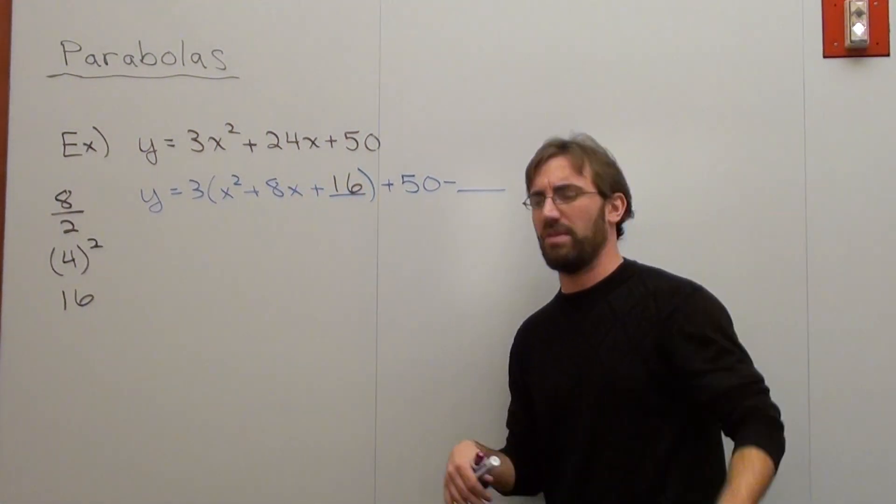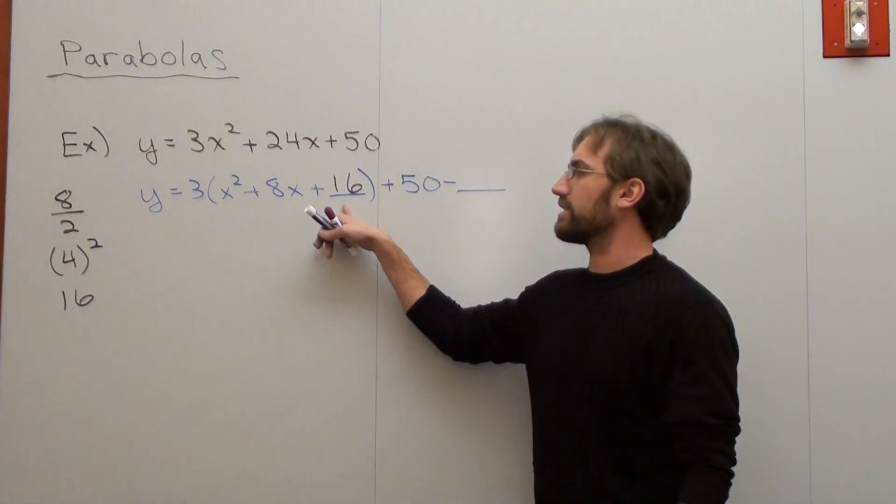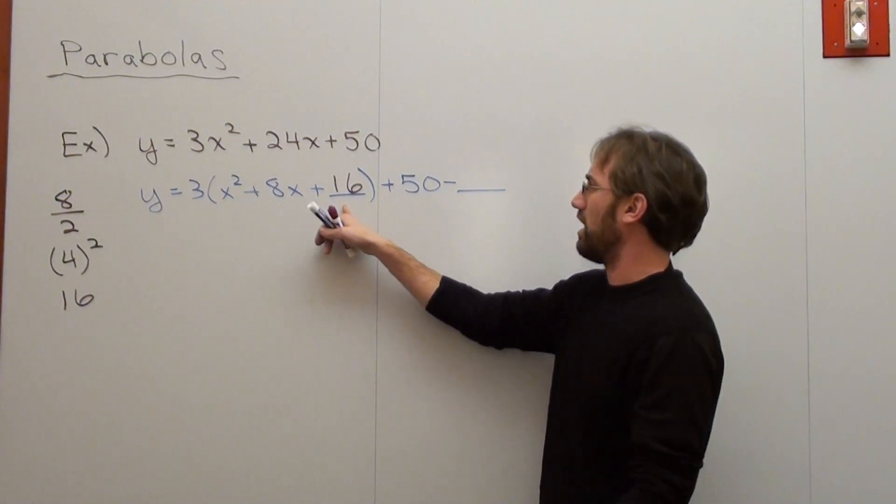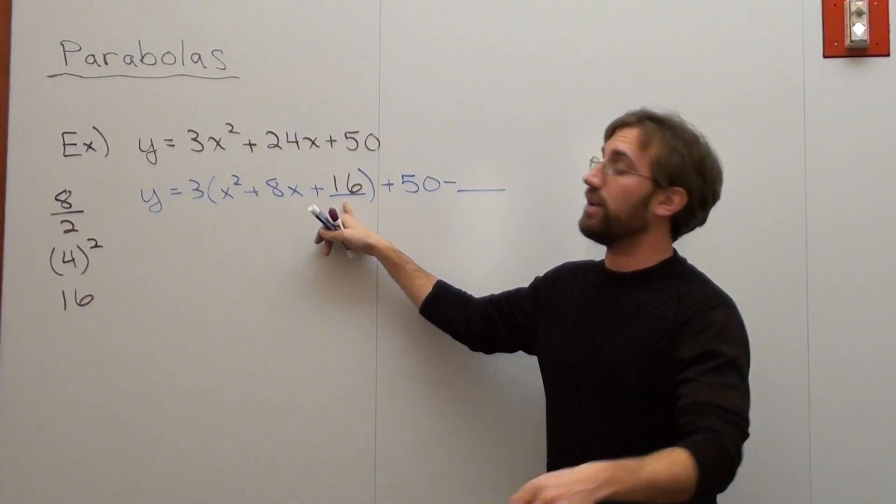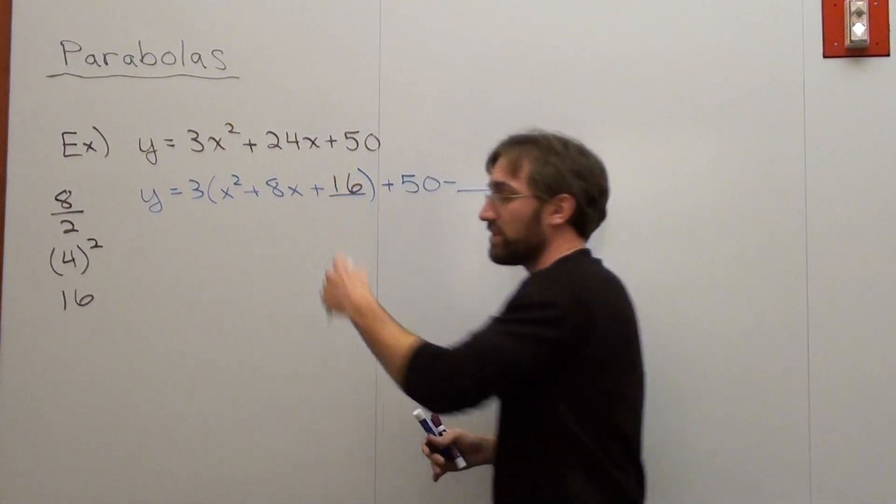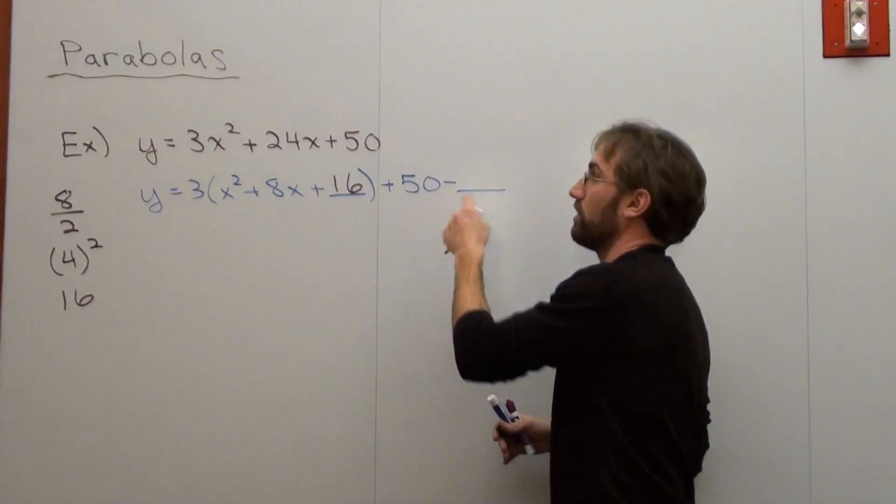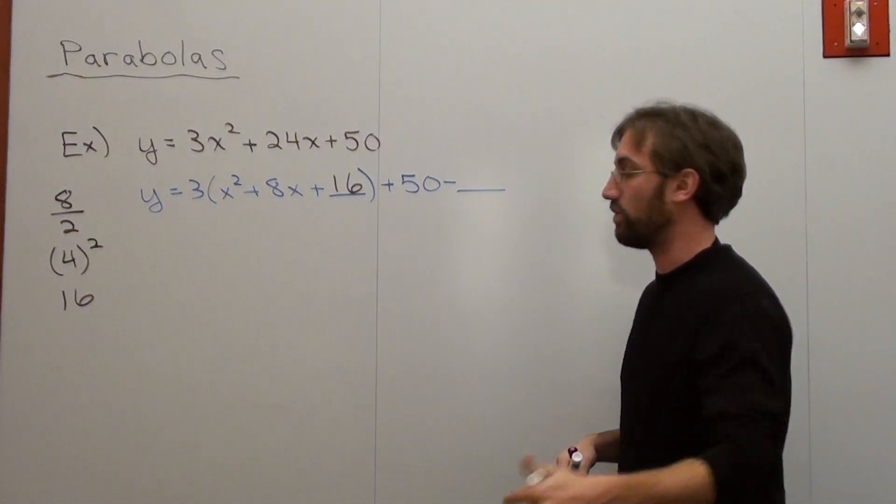Now here's what students do automatically. They say, oh, I'm going to subtract 16. And bam, I'm done. Well, you're not actually adding 16. The students say, well, yeah, I am. 16 is right there. No, you're not. You're adding 3 times 16. So what you have to do is subtract whatever 3 times 16 is. And that's 48.